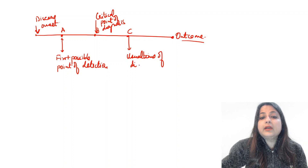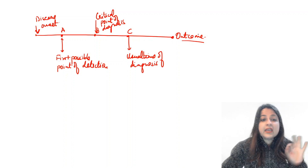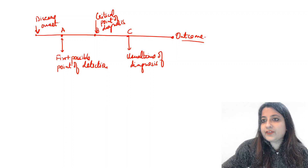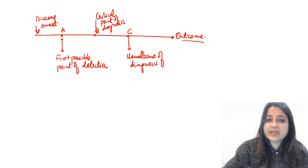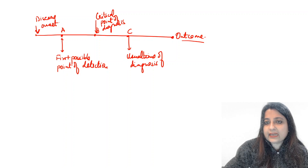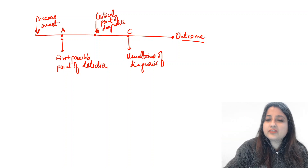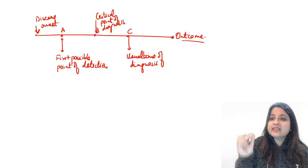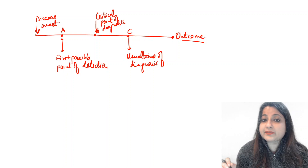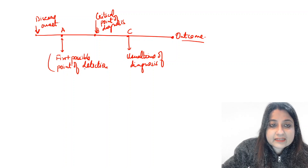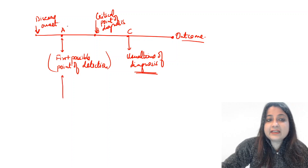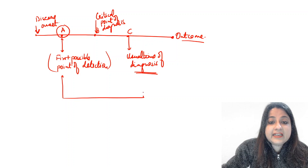Point C is when I start having signs and symptoms — this is the usual time of diagnosis, leading to the outcome. For example, a smoker or someone eating a lot of junk food is at risk for cardiovascular disease or diabetes. The symptoms of diabetes are polyphagia, polyuria, and polydipsia. Can we detect diabetes even before those symptoms appear? That is what the first possible point of detection means.